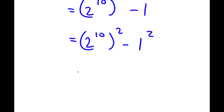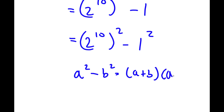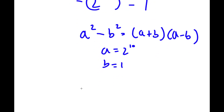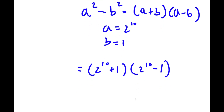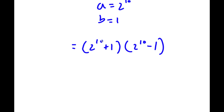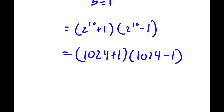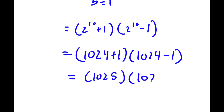Since I have something in the form a squared minus b squared, this equals a plus b times a minus b. Here a equals 2 to the power of 10 and b equals 1. So now I have 2 to the power of 10 plus 1 times 2 to the power of 10 minus 1. Since 2 to the power of 10 equals 1024, I have 1024 plus 1 times 1024 minus 1, which is 1025 times 1023.